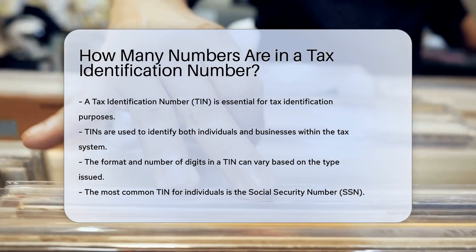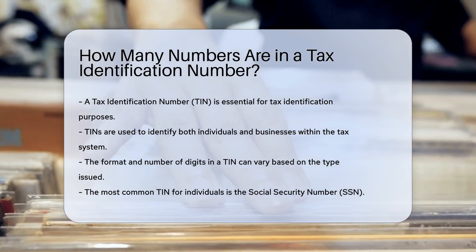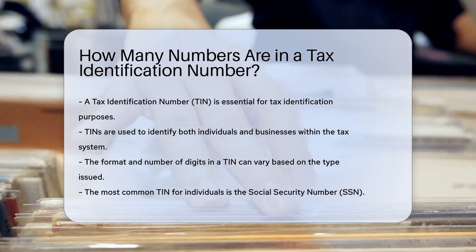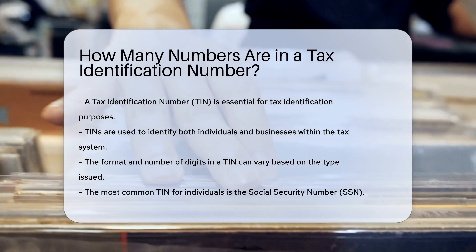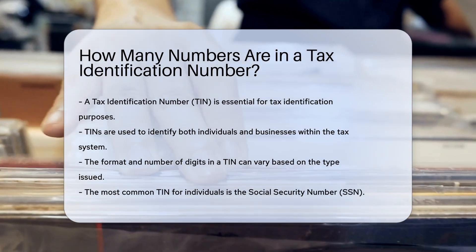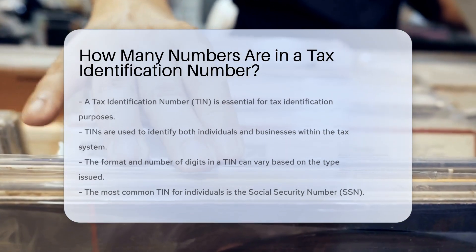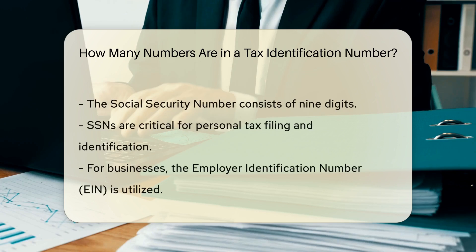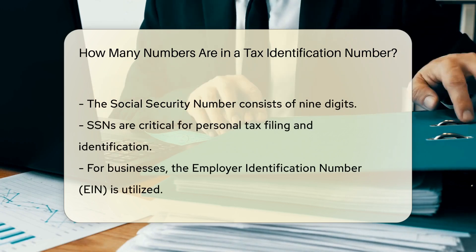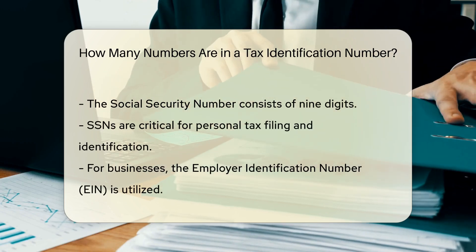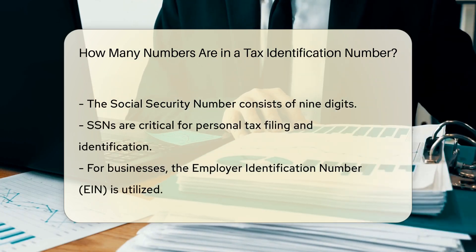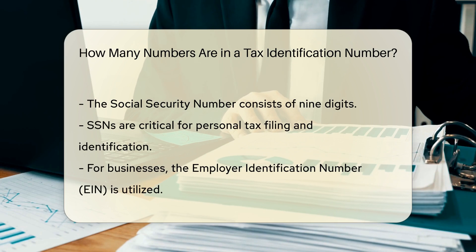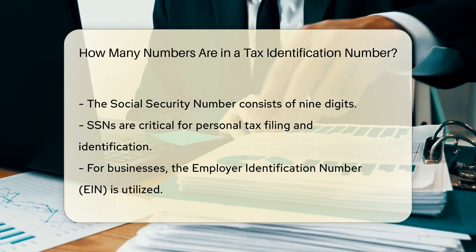The format and number of digits in a TIN can vary depending on the type of TIN issued. For individuals, the most common type of TIN is the Social Security number, which consists of nine digits. This number is essential for personal tax filing and identification.